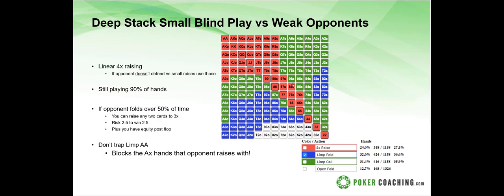The raising range includes all pairs, suited connectors, suited one-gappers, suited eights or better, and ace-nine offsuit or better. The green hands are limps — a variety of suited stuff and big-card high-low type hands. We're still folding the bottom 10 percent of junk pre-flop. The blue hands are limp folds against a raise, and the green hands are limp calls against the weaker opponent. You're still playing about 90 percent of hands.